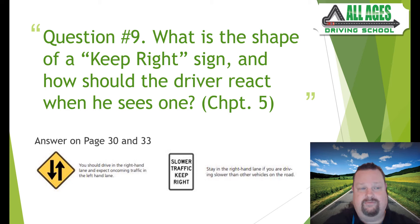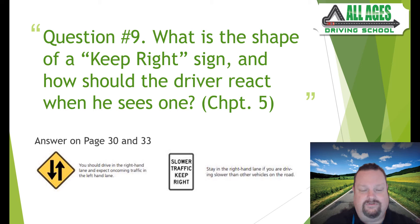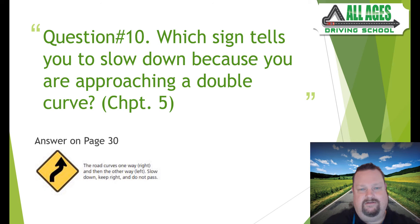Question number nine: what is the shape of a keep right sign and how should the driver react? There are two main types. One is a hazard warning sign indicating lanes go in opposing directions ahead — keep to the right. The other is 'Slower Traffic Keep Right,' found on freeways or multi-lane roads, reminding slower drivers to stay in the right lane.